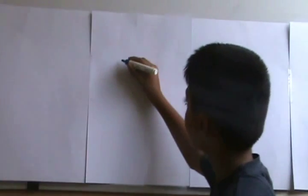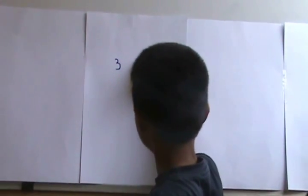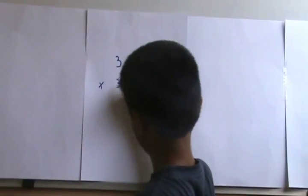This sutra is used for multiplying the numbers where the last digits add up to 10 and the other digits are same. For example 33 x 37.